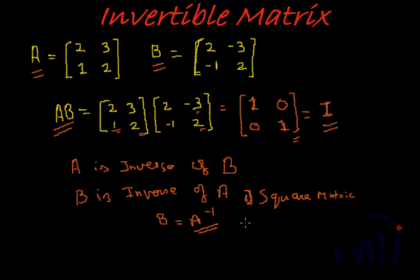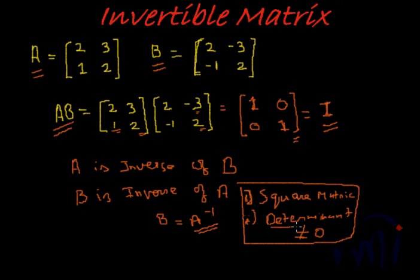And the determinant of the matrix must exist and not equal zero. Both conditions need to be satisfied for a matrix to be invertible. Now, what is the determinant? We will learn in subsequent videos. It is